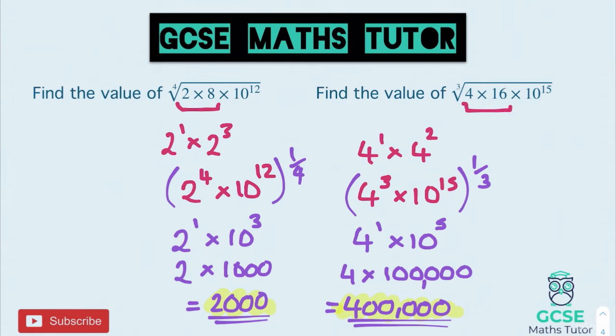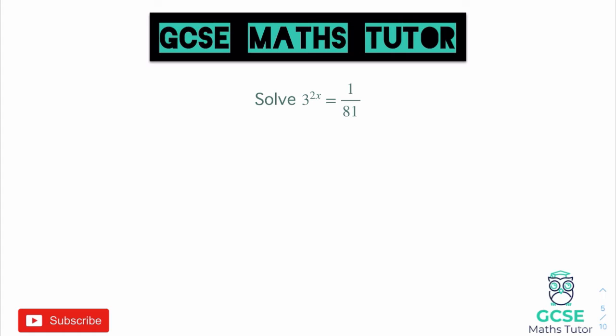Let's have a look at a different type of indices problem — this one involves a little bit of equations as well. It says: solve 3 to the power of 2x equals 1 over 81. We need to think about what is another way of writing 1 over 81. If we can write 1 over 81 as 3 to some power, then we'll have 3 to the power of 2x equal to 3 to the power of something, and we know those powers have to be the same.